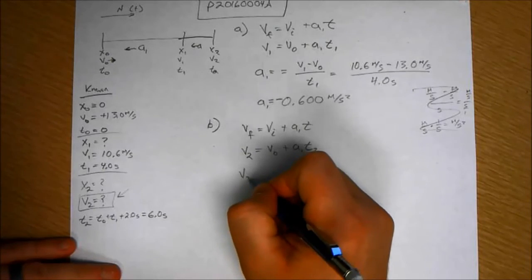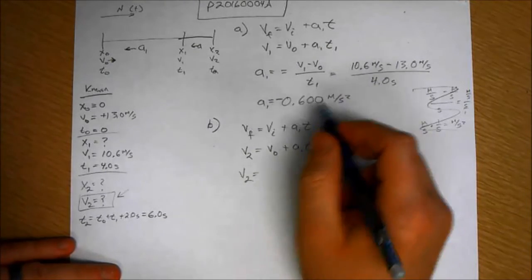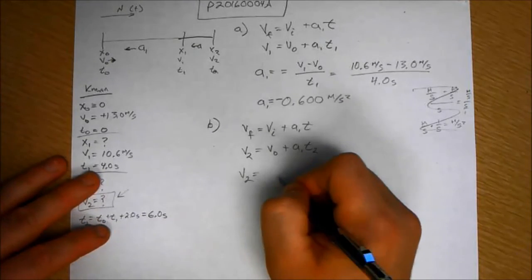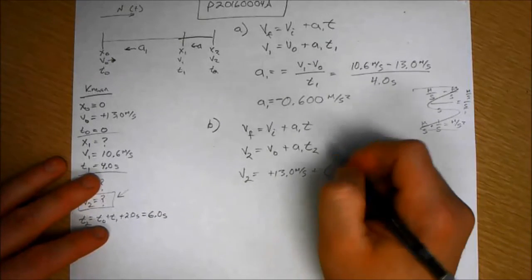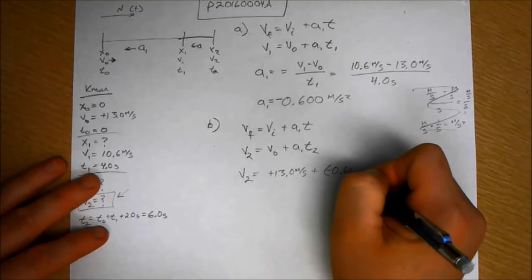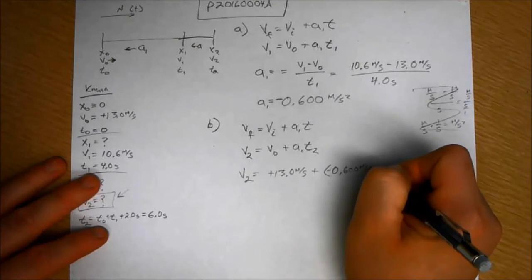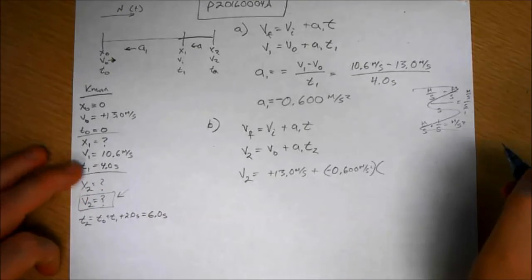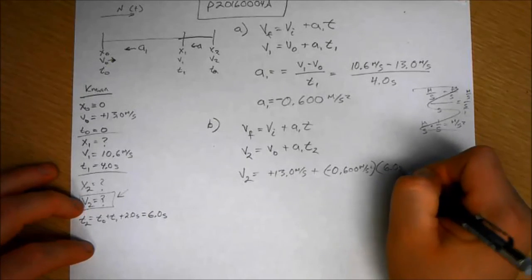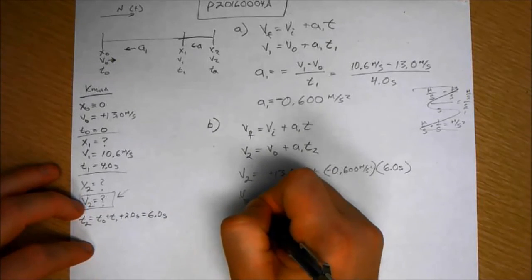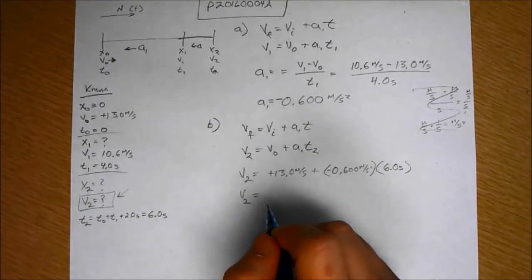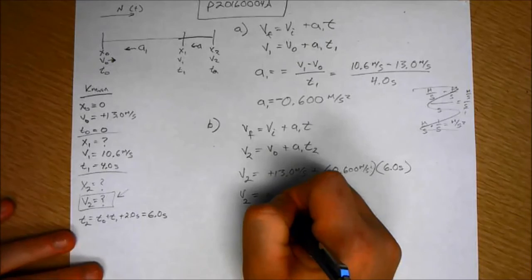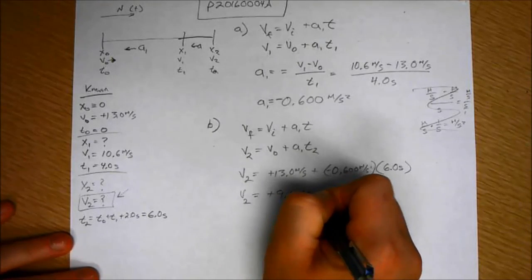So V2 equals V0, which is plus 13.0 meters per second plus negative 0.600 meters per second squared times T2, 6.0 seconds. V2 then equals plus 9.4 meters per second.